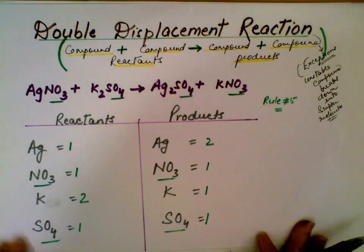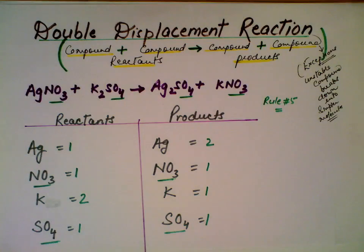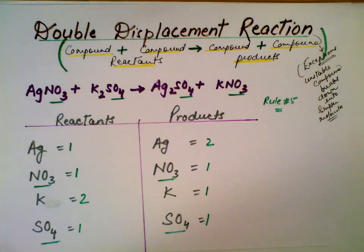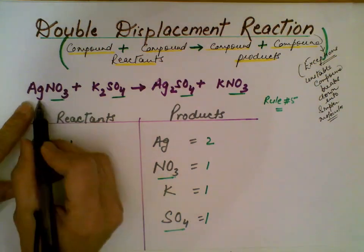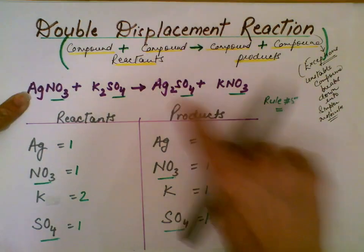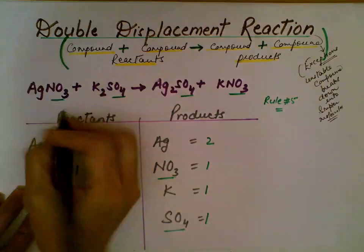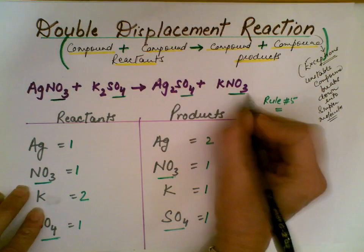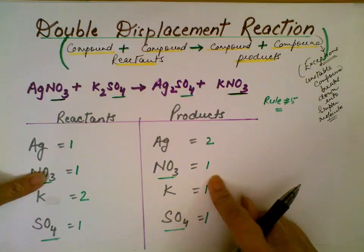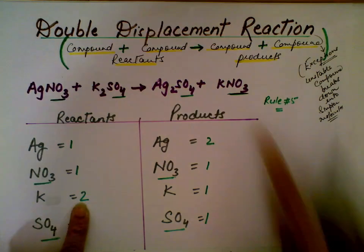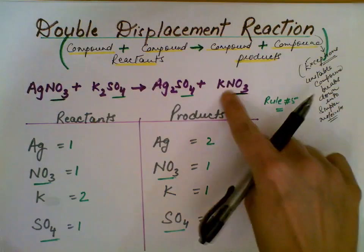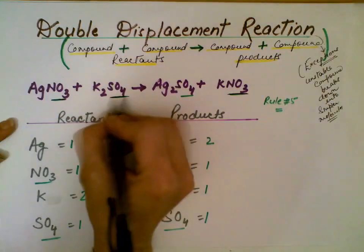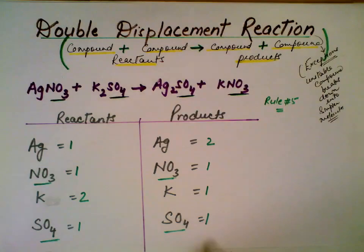Now here is something additional — rule number 5. Whenever you have polyatomic ions on both sides of the equation, you treat them as a single unit. You keep them together and it makes it easier to count and saves time. So you have 1 silver on one side and 2 silver on the other, 1 nitrate — a polyatomic ion — on each side, potassium 2 on the left and 1 on the right, and sulfate — keep SO4 together as a single unit — 1 on each side.